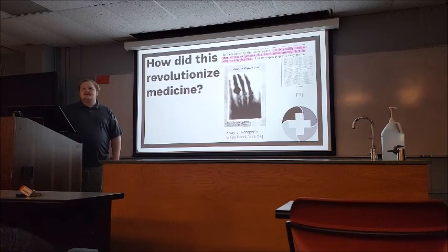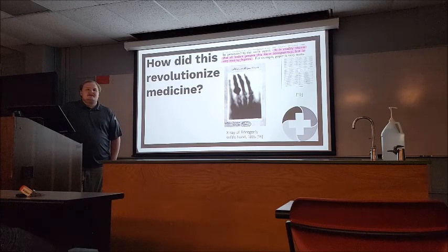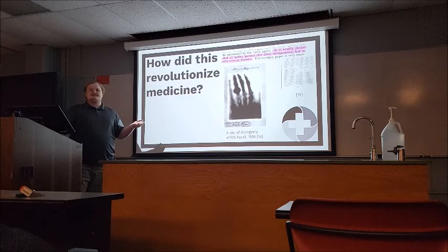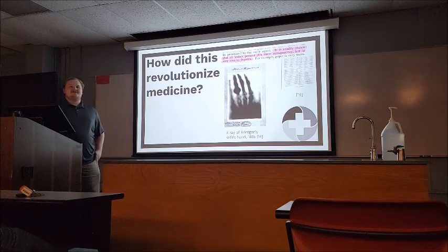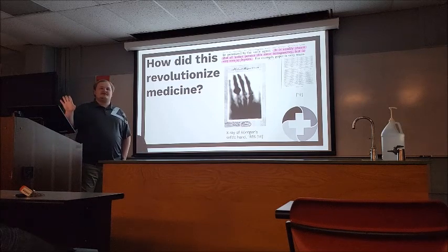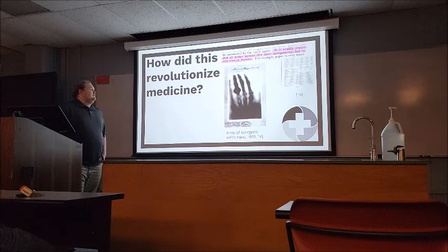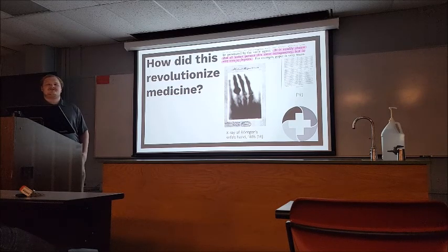He wrapped his cathode ray tube in material that would not allow these cathode rays — what they legitimately thought were rays at the time — to leave. There were people, especially in the UK physics community, who guessed that these were actually charged particles, which was later confirmed by J.J. Thomson when he discovered the charge-to-mass ratio. But Röntgen, a few years before any of that, noticed that even after wrapping the cathode ray tube, he was getting fluorescing crystals on his desk. If he put screens around his room perpendicular to the side of his cathode ray tube, he would actually see emissions from it.